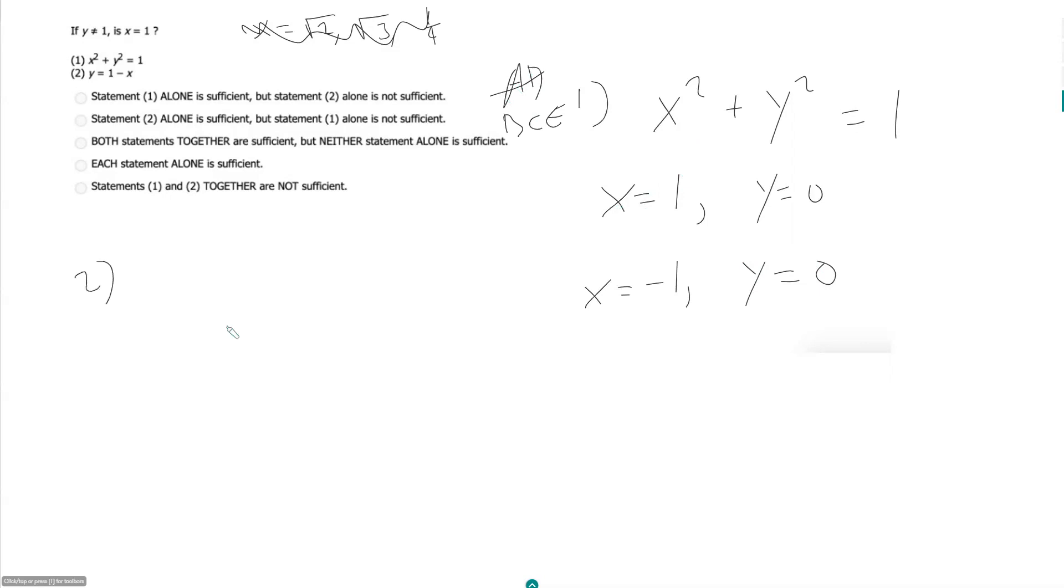Statement 2: y is equal to 1 minus x. So let's see here. Can x be equal to 1? If x is equal to 1, y is equal to 0.